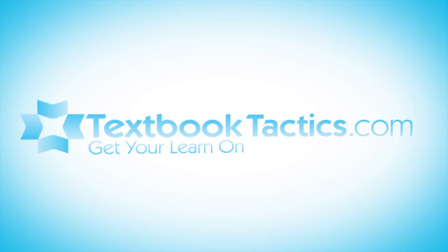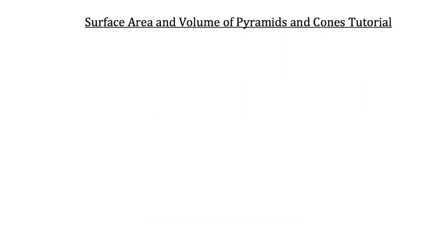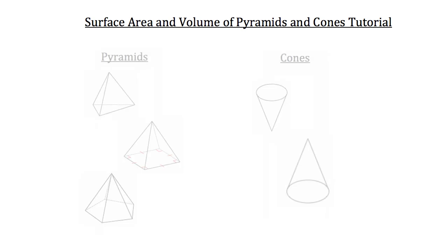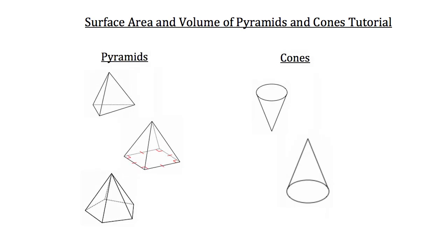This is the surface area and volume of pyramids and cones tutorial. Let's begin by identifying what pyramids and cones are. Here are a few examples: in the top left we have a regular triangular pyramid, below that is a square pyramid, and further below is a pentagon pyramid. And then we just have your typical cone, which is a circle with two lines coming up to meet some point in space.